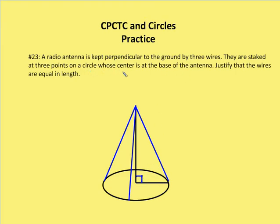They are staked at three points on a circle whose center is at the base, center is at the base, right here, of the antenna. Justify that the wires are equal in length.